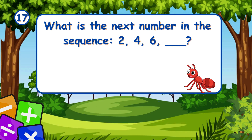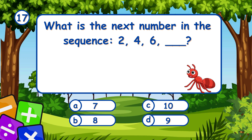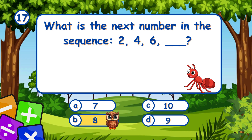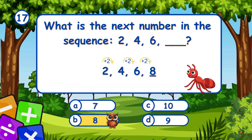What is the next number in the sequence? 2, 4, 6... It's B, 8. The sequence increases by 2, so the next number is 8.